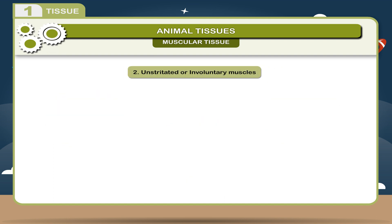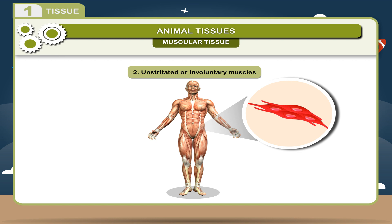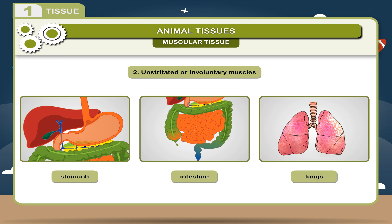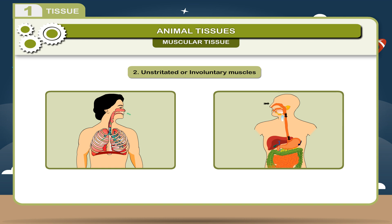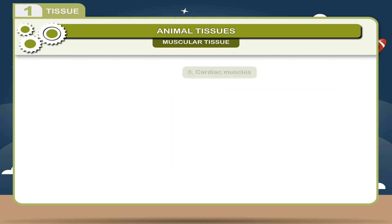2. Unstriated or Involuntary Muscles: These are composed of cylindrical but spindle-shaped fibers and have no striations on them. They are found on the walls of the stomach, intestine, lungs, etc. These muscles help in breathing, digestion, and other activities. They are not in our control and are therefore called Involuntary Muscles.